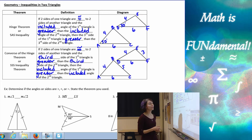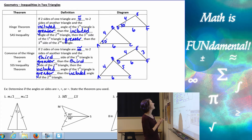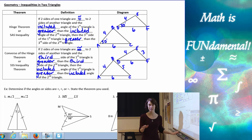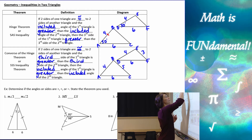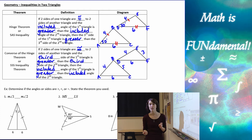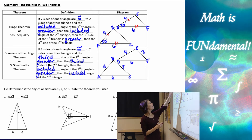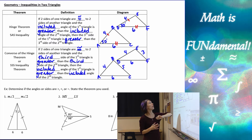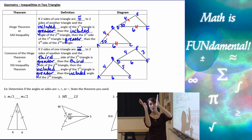So first we're going to define what the hinge theorem is. The hinge theorem states that if two sides of one triangle are congruent to two sides of another triangle — meaning they're the same length — and the included angle of the first triangle is greater than the included angle of the second triangle. The included angle is the angle in between the two sides whose lengths we're given.